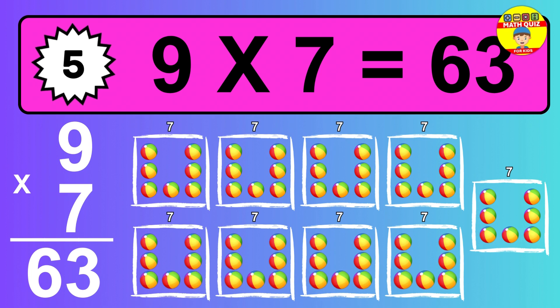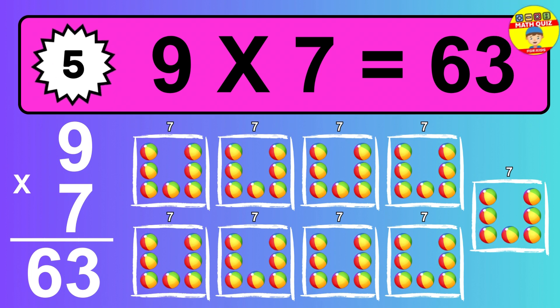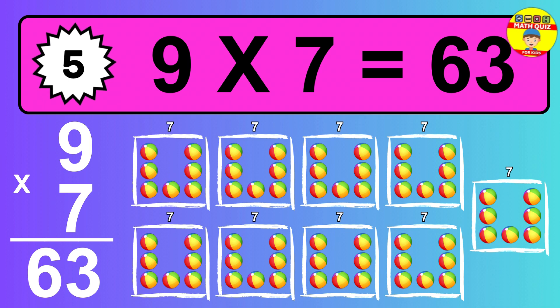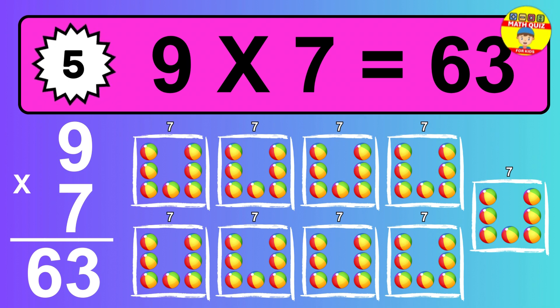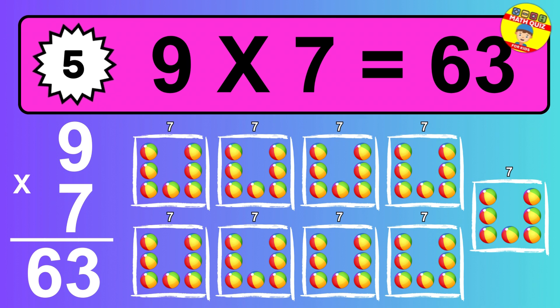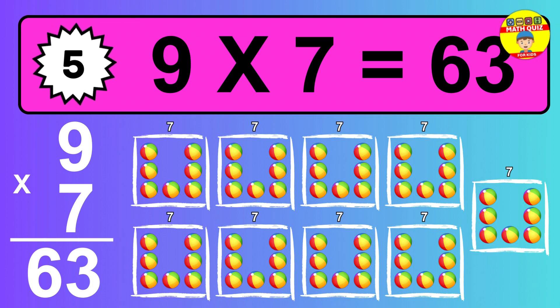Question 5. 9 times 7 equals what? So the answer is 9 times 7 is 63. To calculate, we have 9 groups with 7 balls each one. So how many balls do we have? 63 balls.